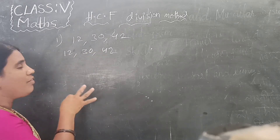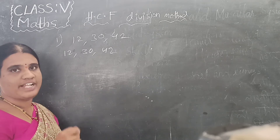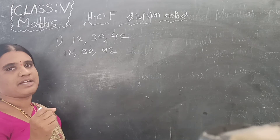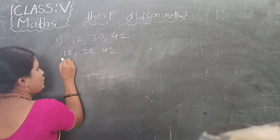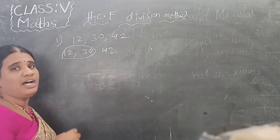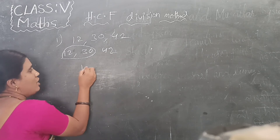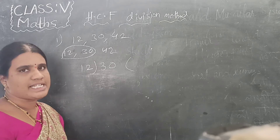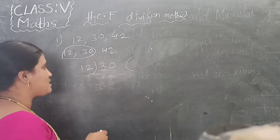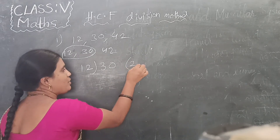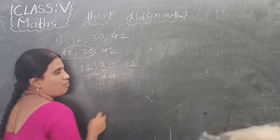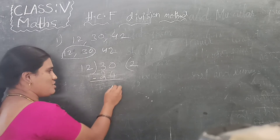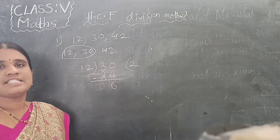Now we have to do the long division method. How do we do the division method? It is the same as normal but something different. First, take the first two numbers: 12 and 30. In the 12 times table, 30 is not coming exactly. The nearest smaller number is 24 — that is 12 times 2. So we do the subtraction and we are making the remainder as 6.